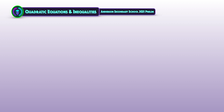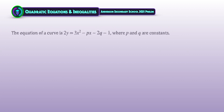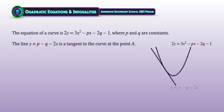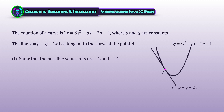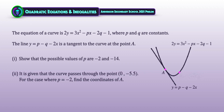Let's practice another similar question from Anderson Secondary 2021 Preliminary Examination. The question: curve 2y = 3x² − px − (2q − 1), where both p and q are constants. A line y = p − q − 2x is tangent to the curve at point A. In part 1, show that p = −2 or p = −14. In part 2, given the curve passes through (0, −5.5), find the coordinates of A if p = −2. Pause to give it a try.